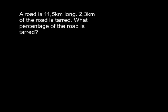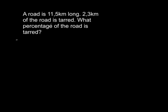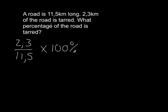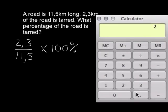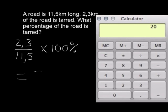Let's look at another example, this time involving decimals. A road is 11.5 kilometers long and 2.3 kilometers of the road is tarred. What percentage of the road is tarred? 2.3 out of 11.5 is the fraction that is tarred, and we want to turn that into a percentage. This time, we're going to use a calculator: 2.3 divided by 11.5 multiplied by 100, and we get our answer of 20%.